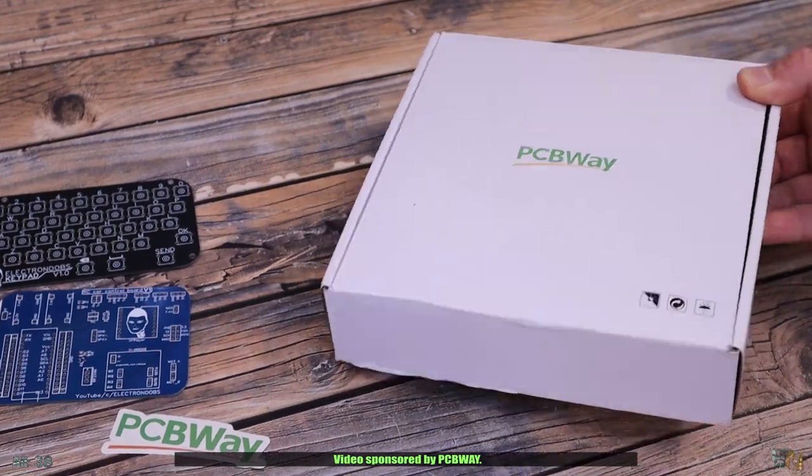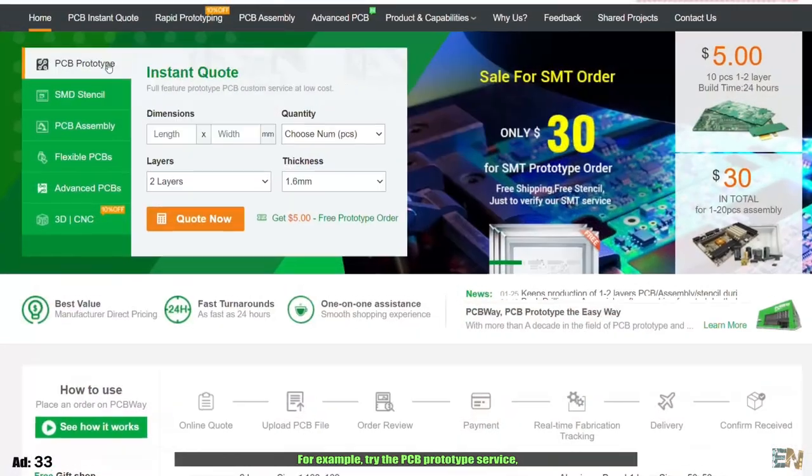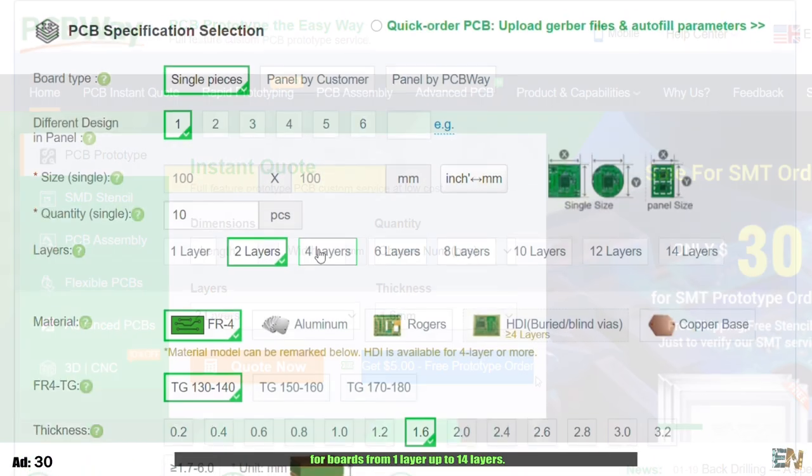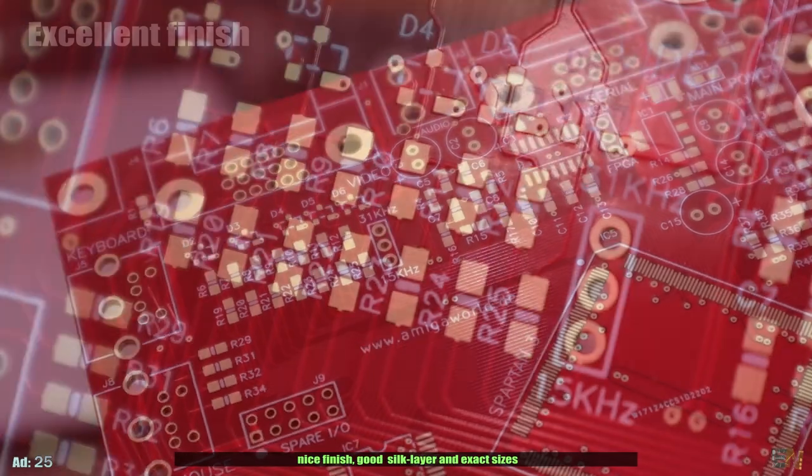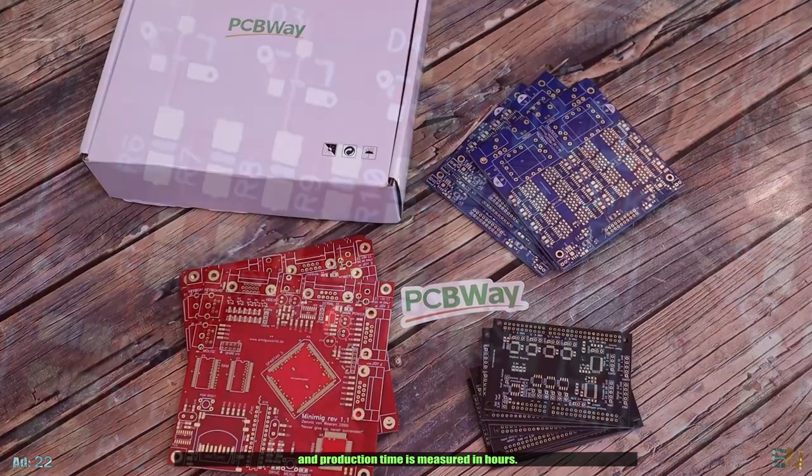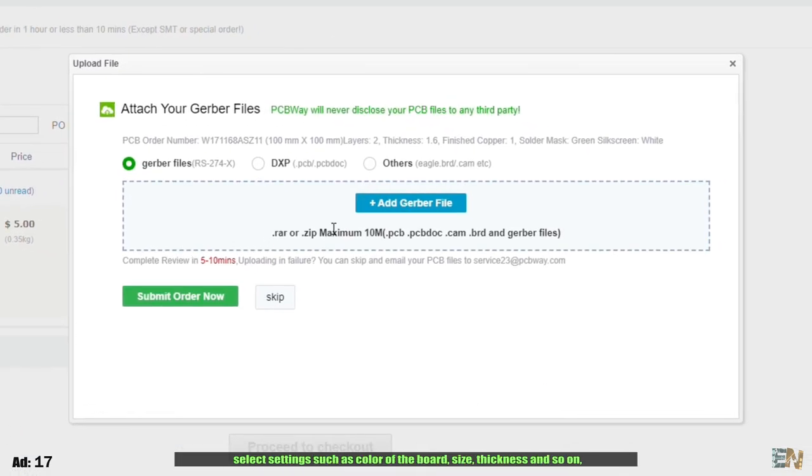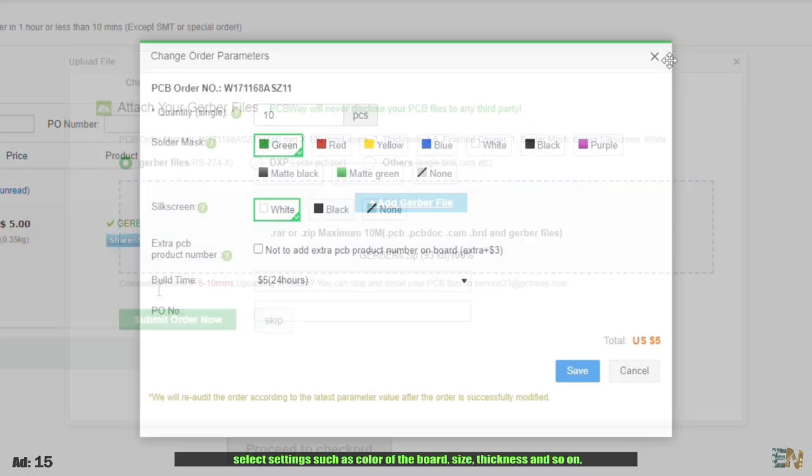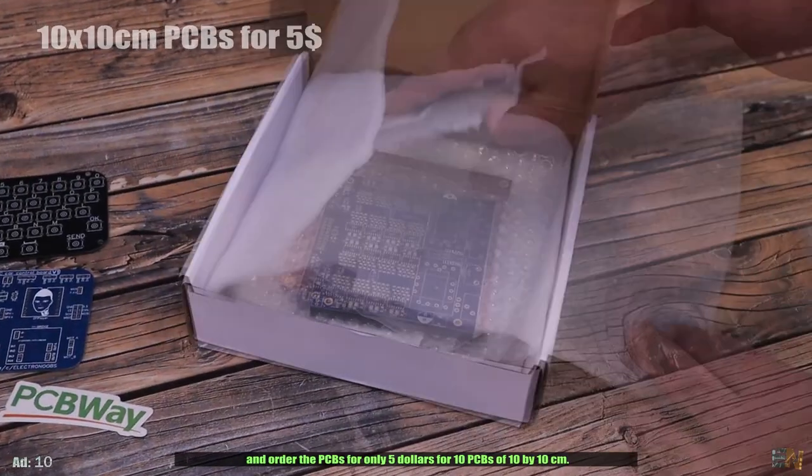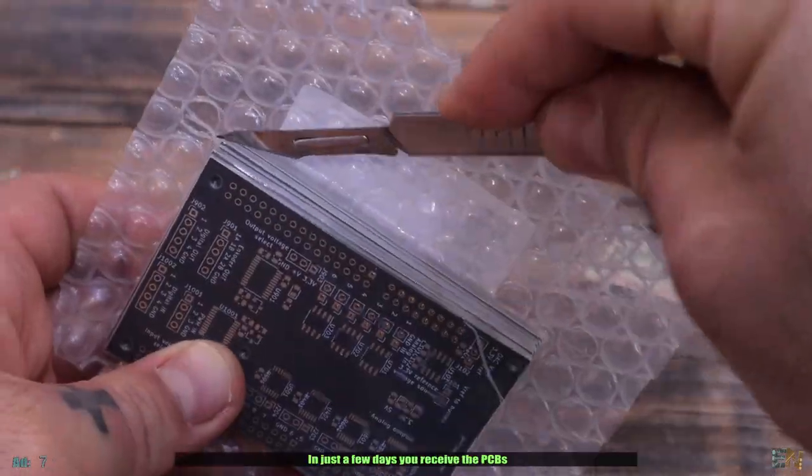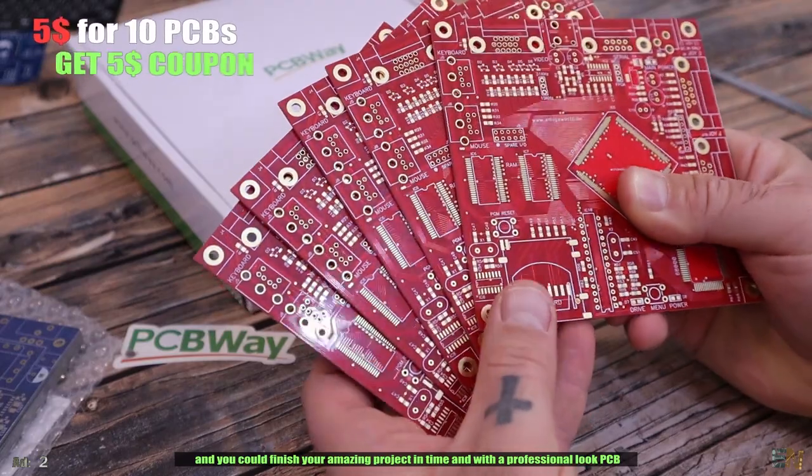Video sponsored by PCBWay. If you have a PCB project, you must check their services. Try the PCB prototype service for boards from one layer up to 14 layers. The PCB quality is amazing. Nice finish, good silk layer, exact sizes, and the production time is measured in hours. Upload the Gerber files of your PCB, select the settings such as the color, size, and thickness, and order the PCBs for only $5 for 10 PCBs of 10x10 cm.